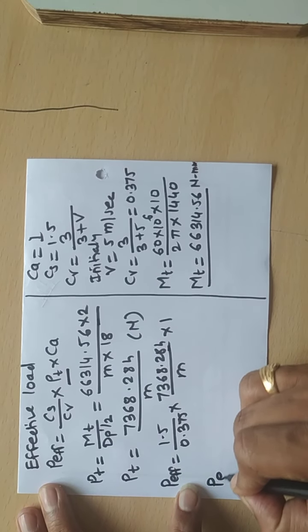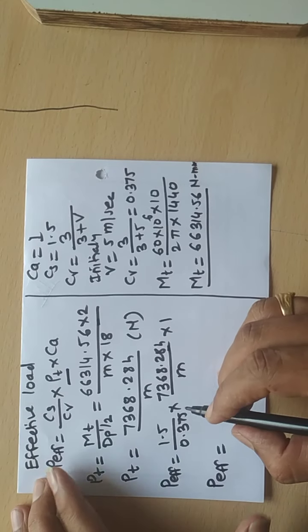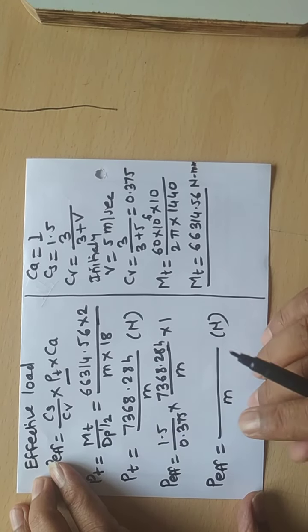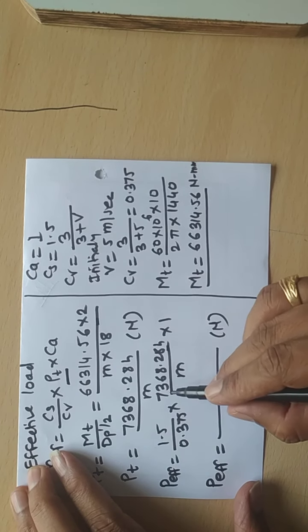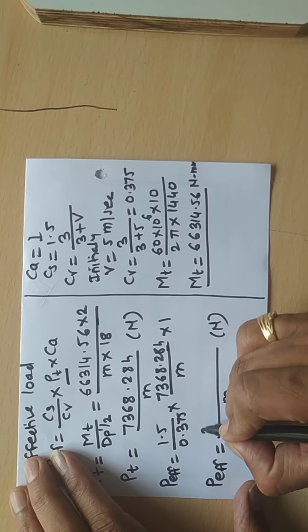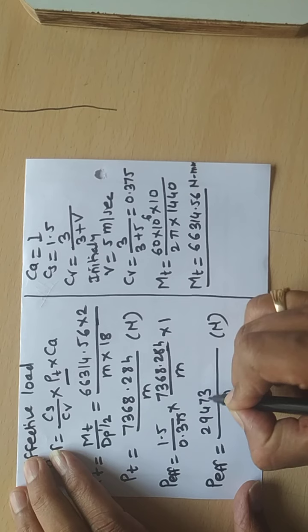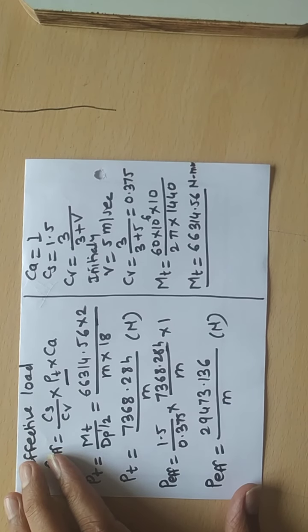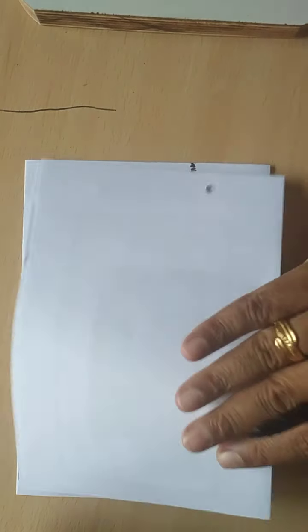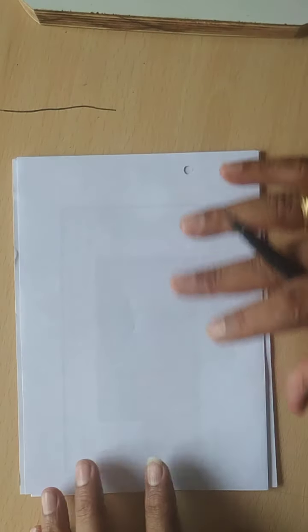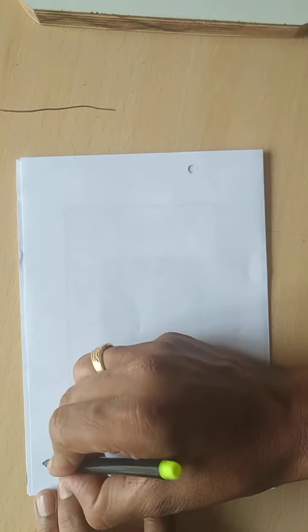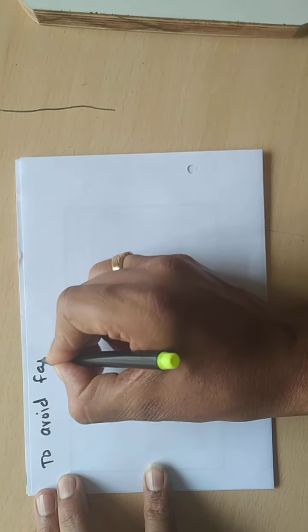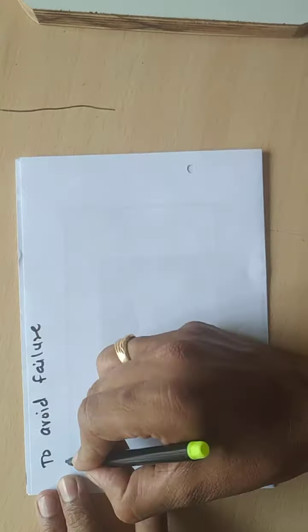Now find the effective load: P_effective = (CS / CV) × PT × CA = (1.5 / 0.375) × (7368.284 / M) × 1. By calculation, P_effective = 29473.136 / M Newton. This is the effective load in terms of M.